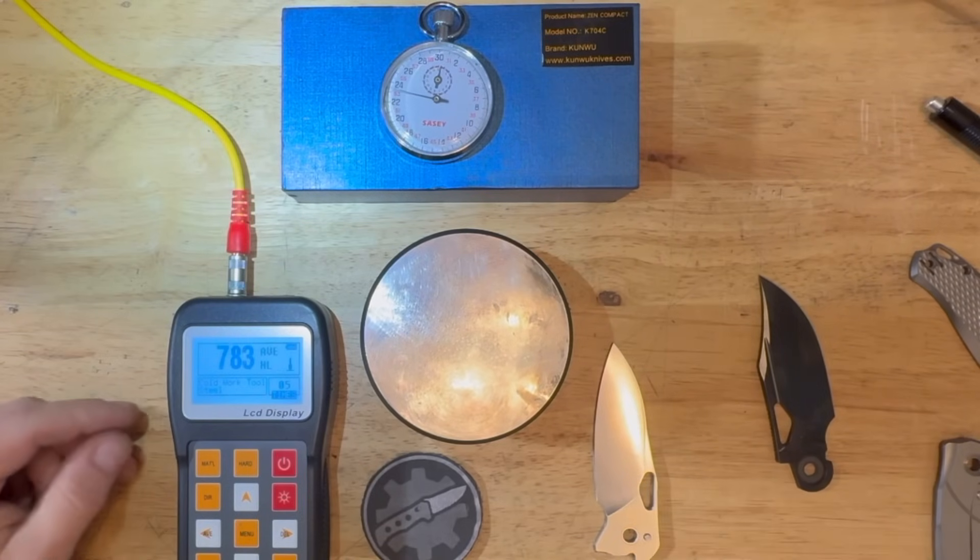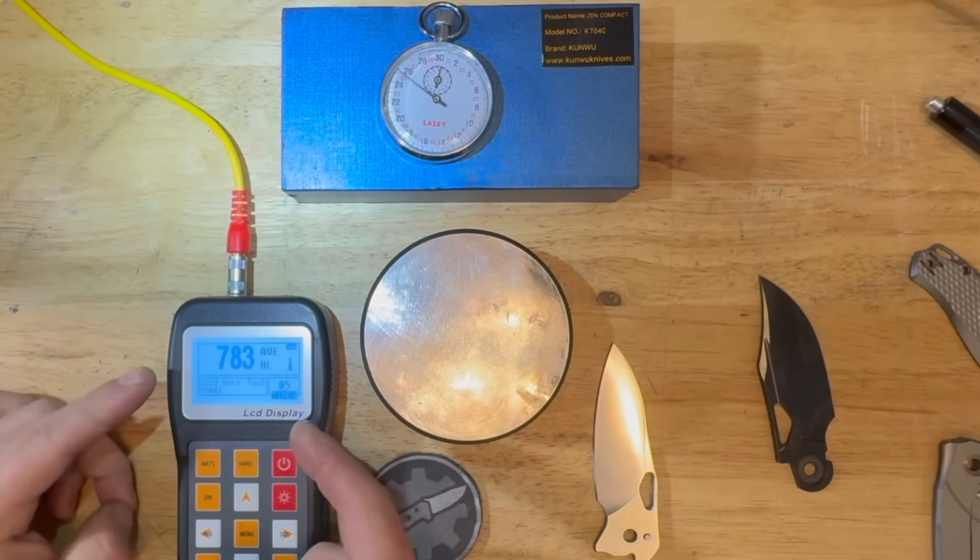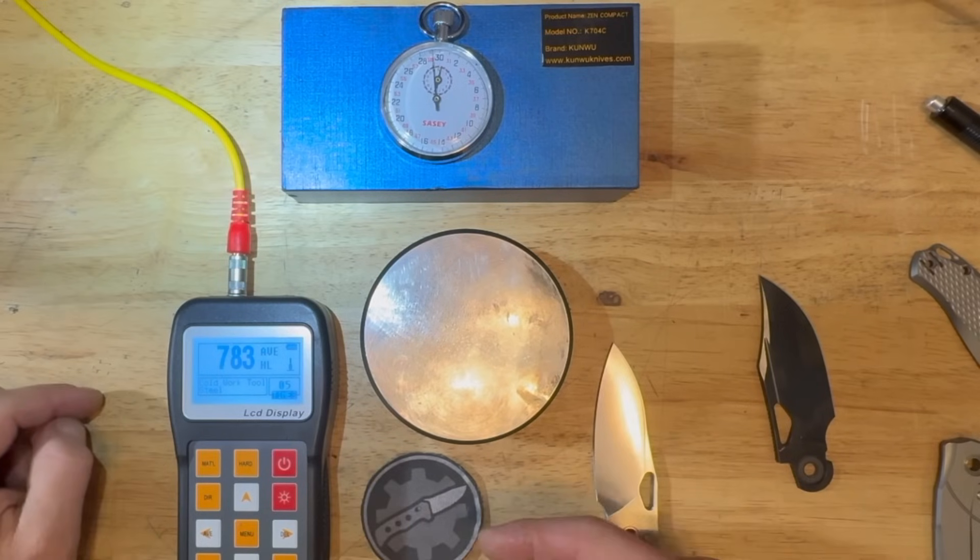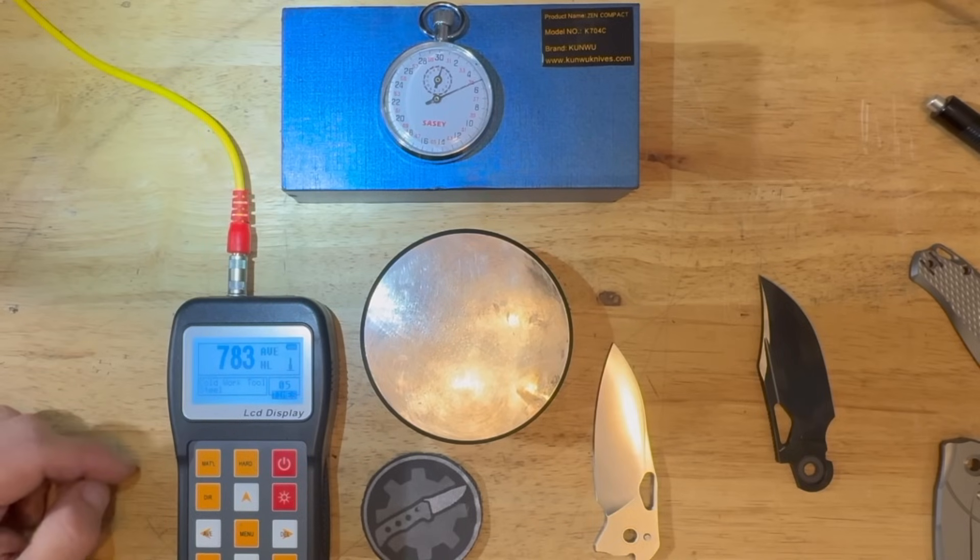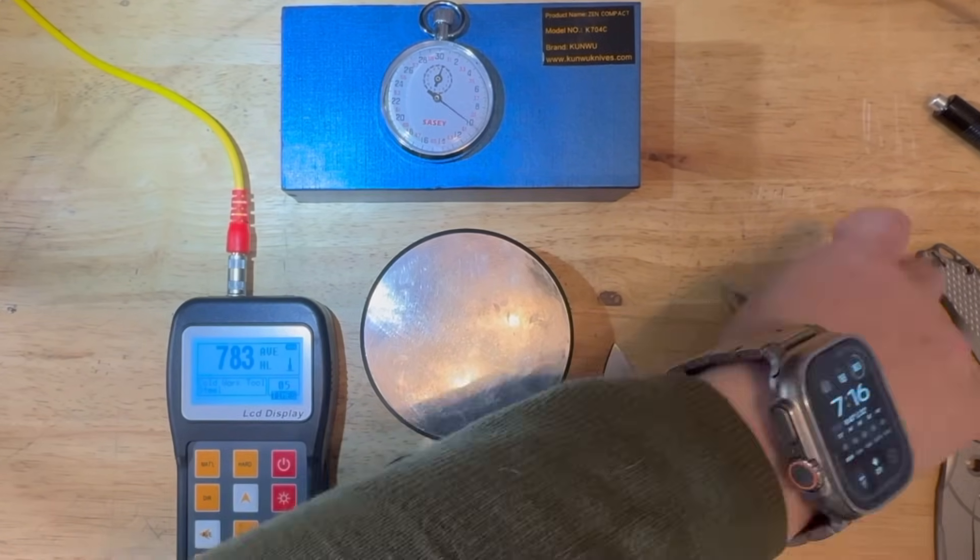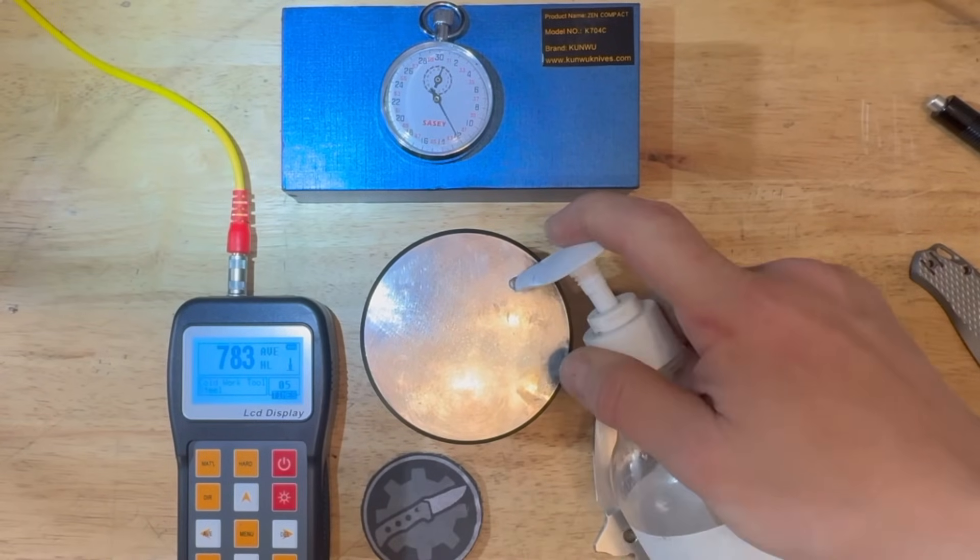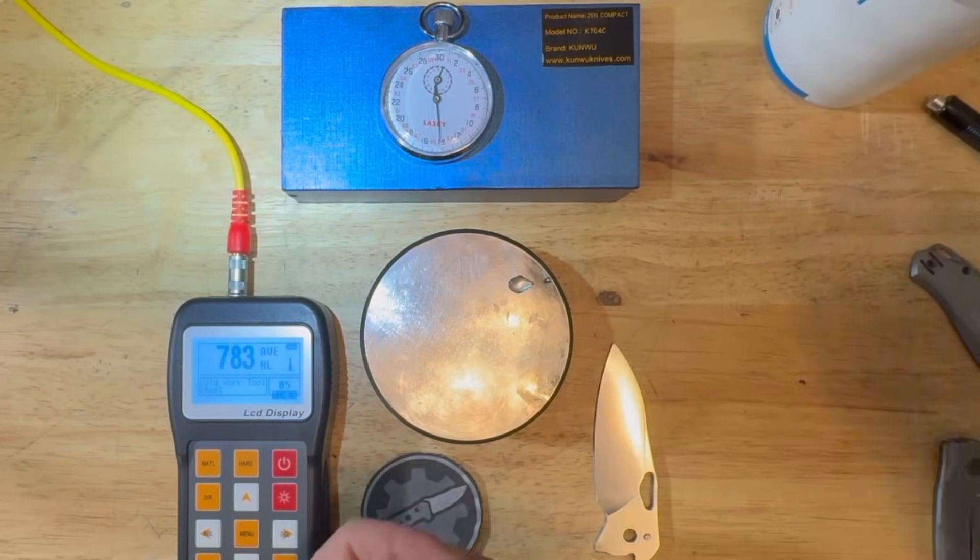Which gives me a zero shift or error of four points to the negative side on Leeb scale. One Leeb point is equivalent to 0.07 point on Rockwell scale. And since I'm four points on Leeb scale short, I will be adding 0.3 Rockwell points to the results of the test here going forward.